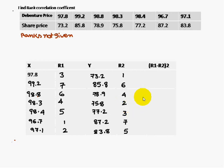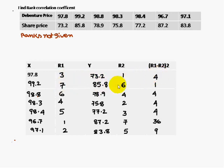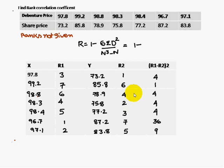Next, calculate the difference of ranks (D) and then D squared. For example: 3 minus 1 = 2, so D² = 4; 7 minus 6 = 1, so D² = 1; 6 minus 4 = 2, so D² = 4. Continue this for all pairs to complete the D² column.